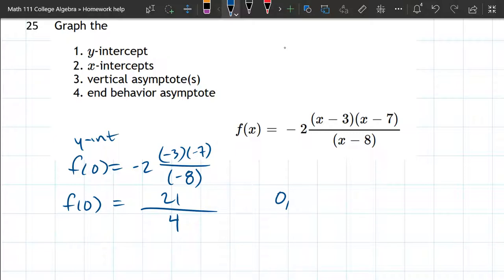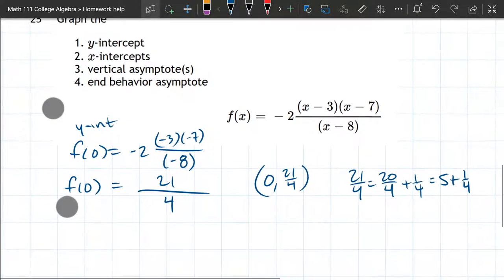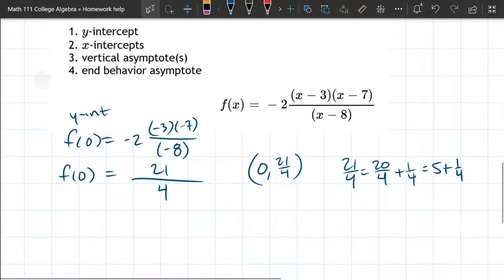And this is our y-intercept. So when we plot it, it'll be zero comma 21 fourths. It might be kind of tricky on the graph, just remember 21 fourths is very close to 20 fourths, which is five and a fourth. So we're gonna plot that at five and then one fourth higher than five.